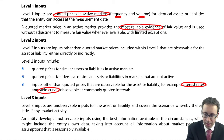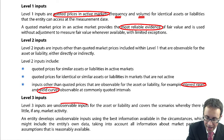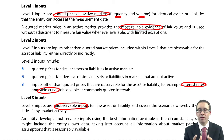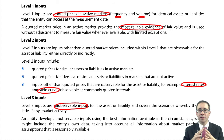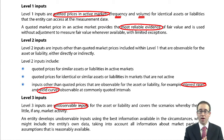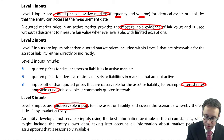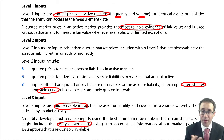Level 3 is essentially just a well-educated guess, and it talks about unobservable inputs. There's very little with regards to an active market, and very little that is observable in terms of interest rates or yield curves. There's nothing similar to what you're doing on the market, but you need to come up with a fair value. So what you can do is use your own data, though obviously that would need to be orderly data.